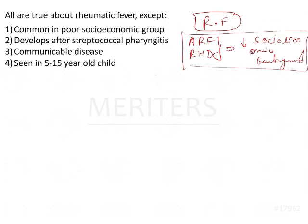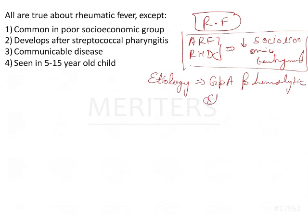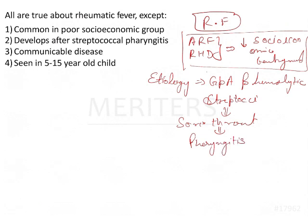Regarding etiology, rheumatic fever is generally caused by Group A beta-hemolytic streptococci. This particular infection generally manifests as sore throat, starting with pharyngitis — so there is infection of Group A beta-hemolytic streptococci that manifests as pharyngitis.